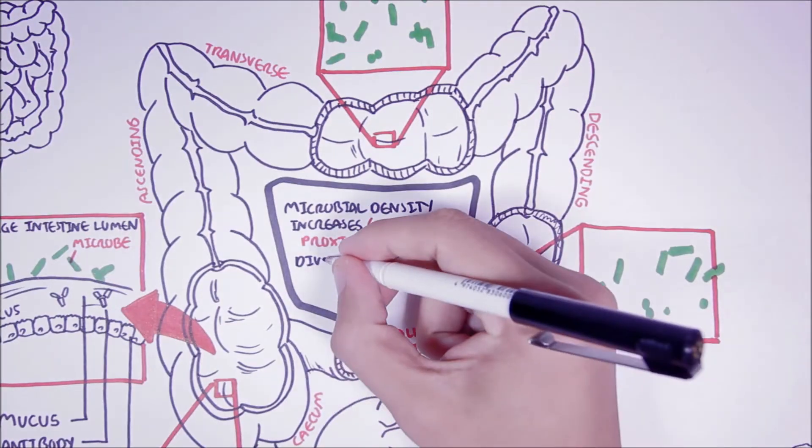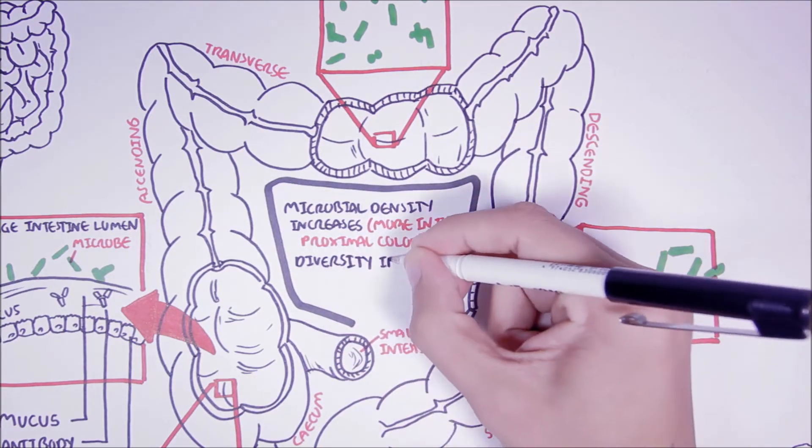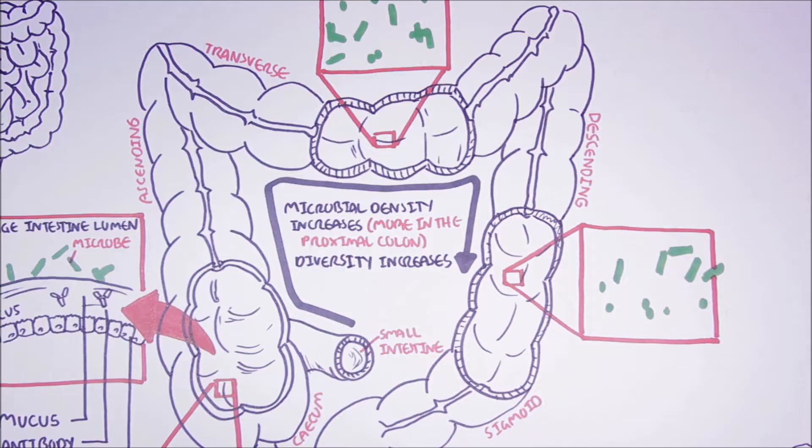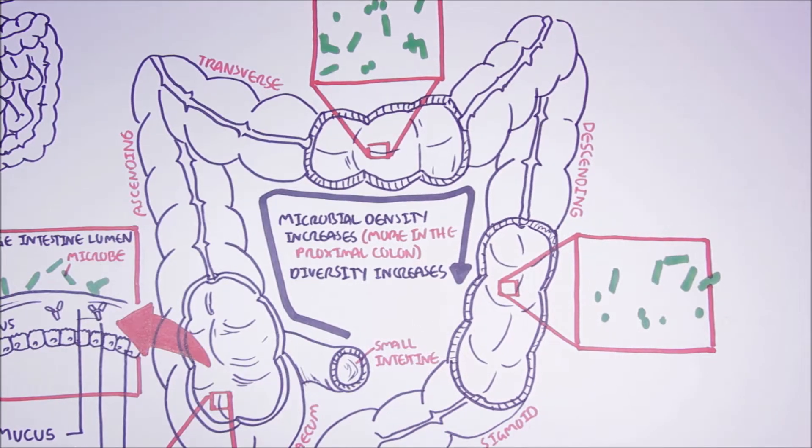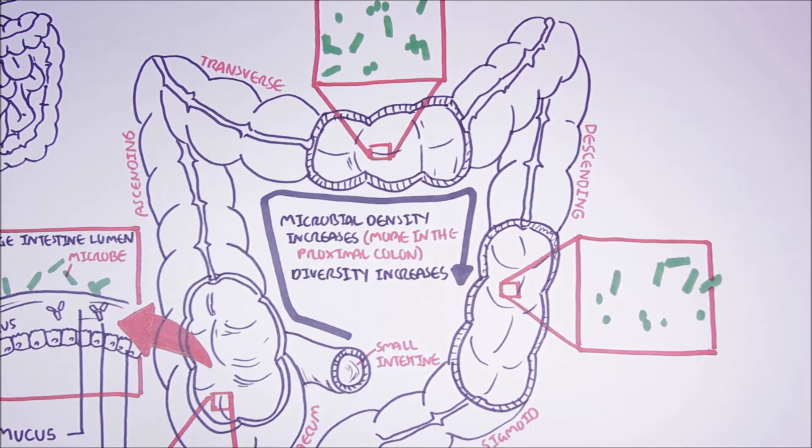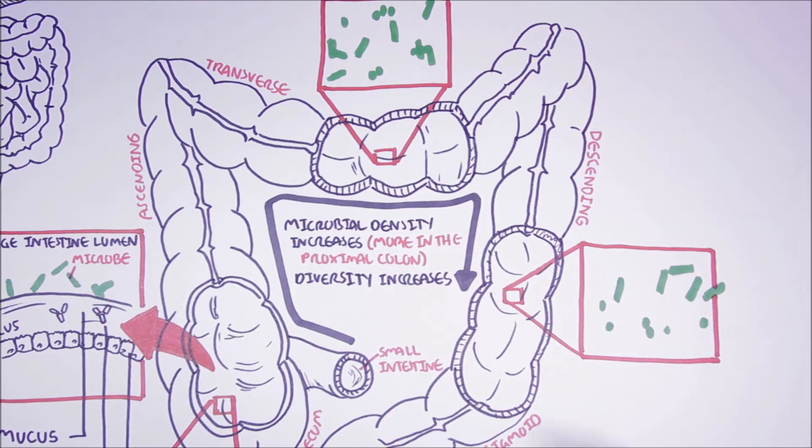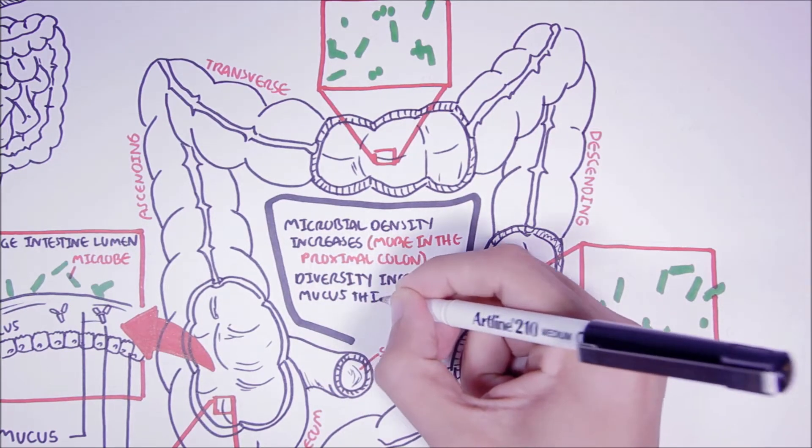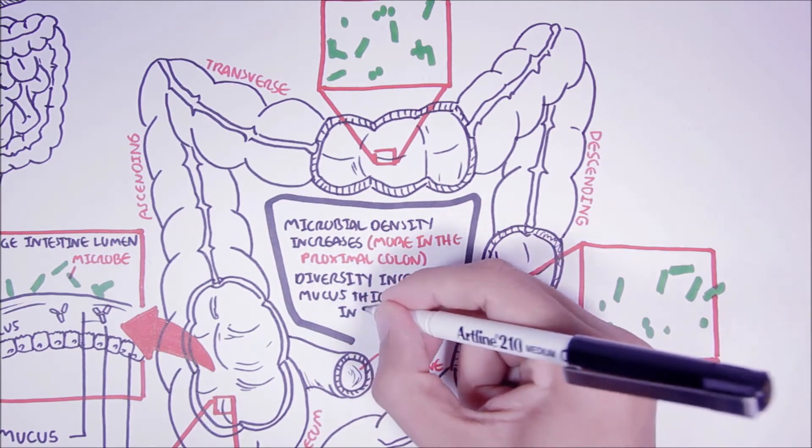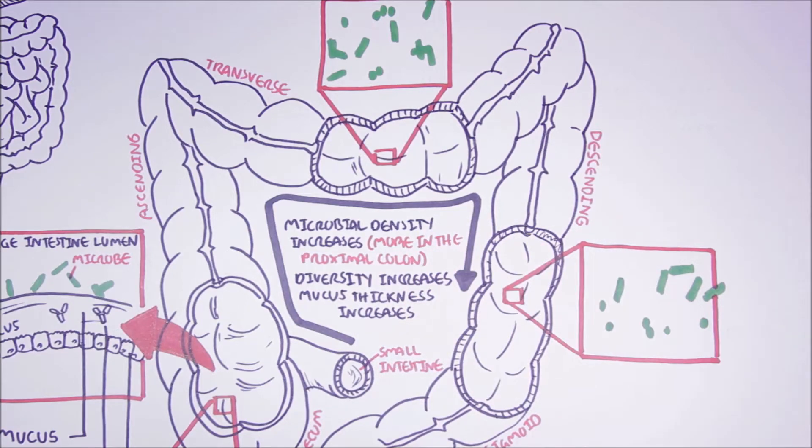As well with this increase in density, there is also an increase in bacterial diversity. So there are more bacterial species as we move towards the end of the colon. With the increase in bacterial diversity and density, there is also an increase in mucus thickness.